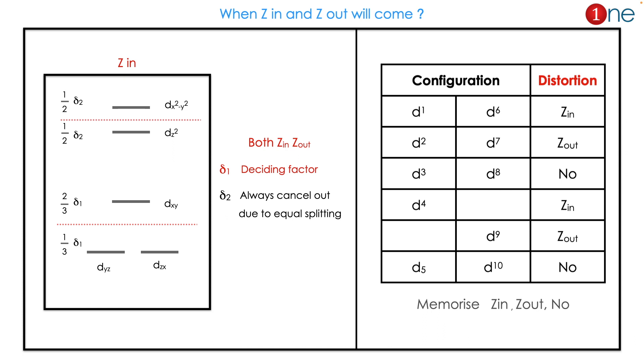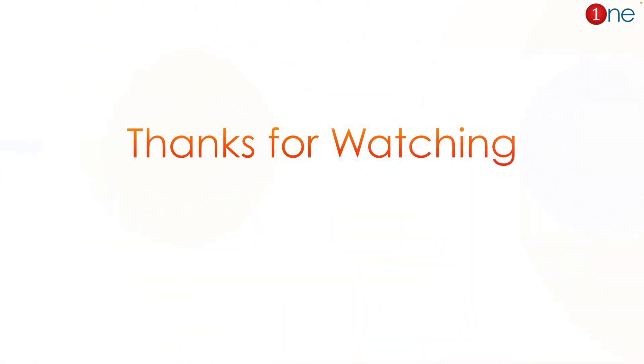You have to remember the order of d¹ to d¹⁰, and you have to remember the words Z_in, Z_out, and No. Memorize: Z_in, Z_out, No. That's all from this video. Thanks for watching.